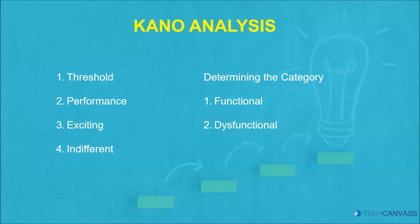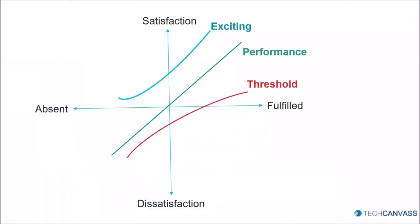Let us understand usage considerations of Kano analysis. The strength of this technique is it can determine feature priority based on the desired position in the marketplace. But the technique has its limitations due to its focus. Since the technique focuses only on customer satisfaction, no other factors are taken into account for backlog prioritization.